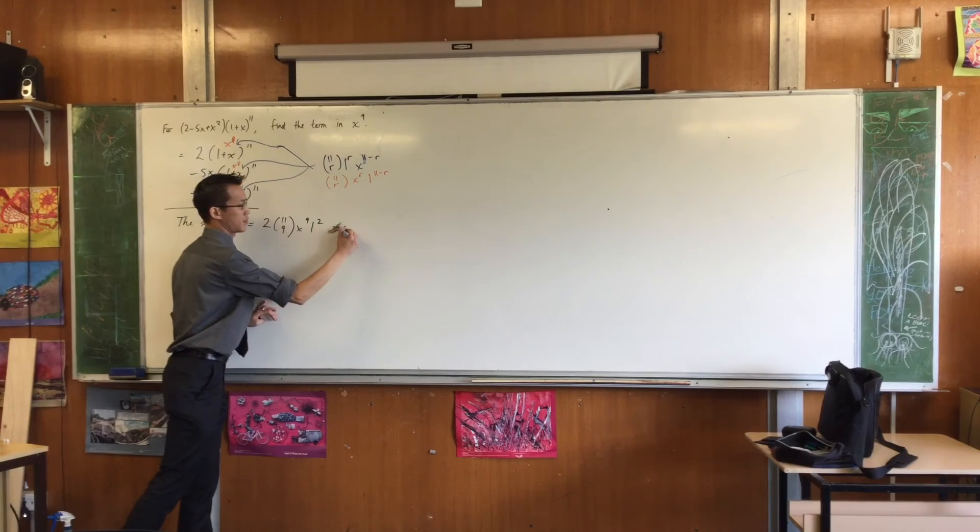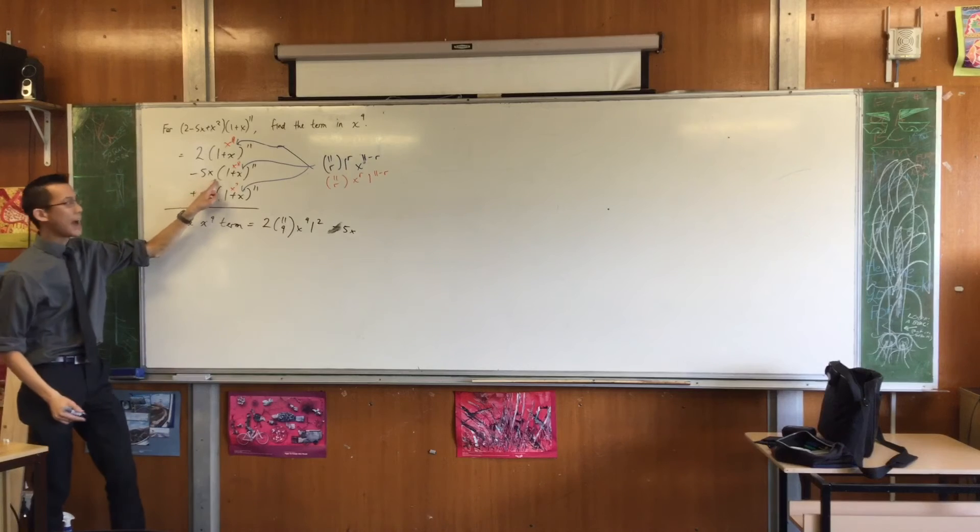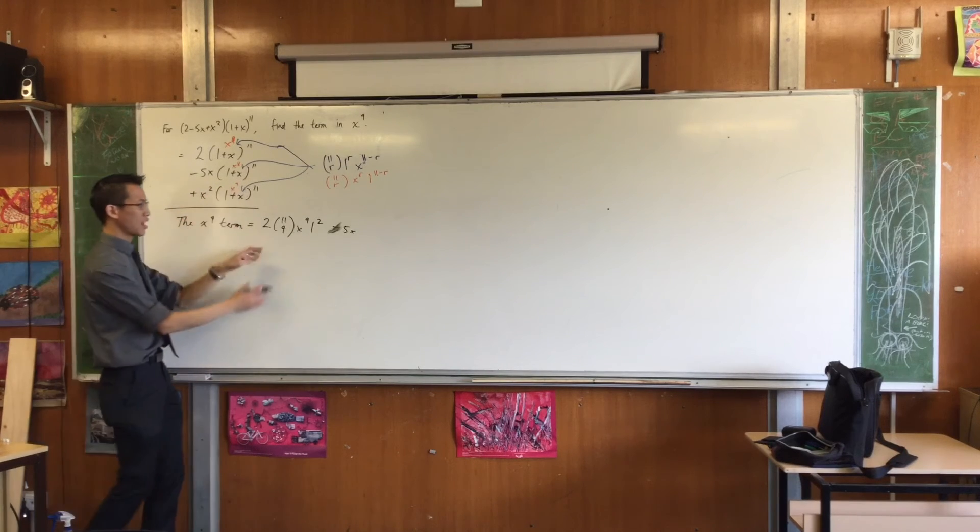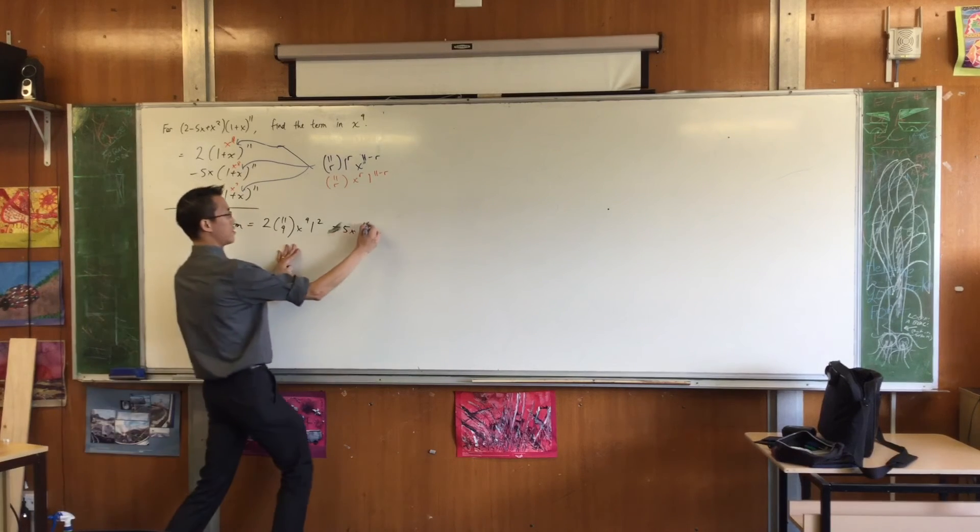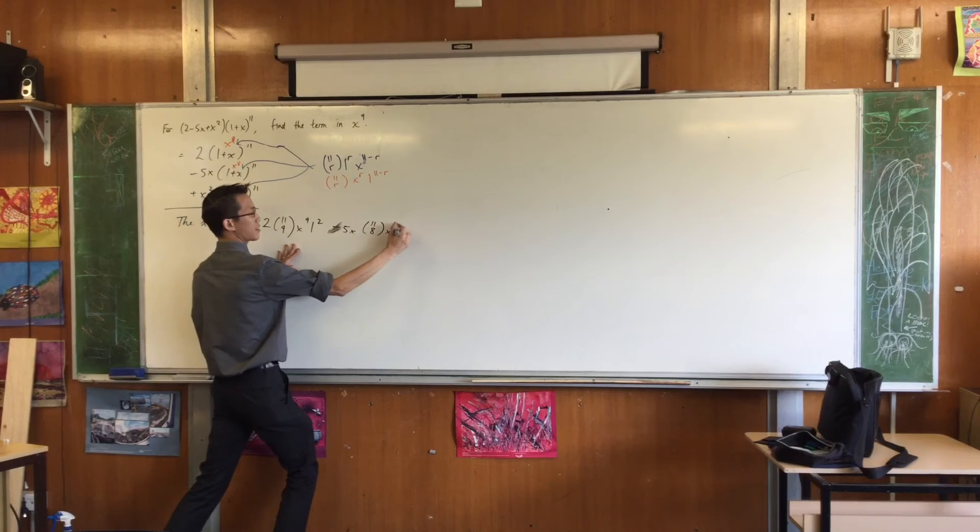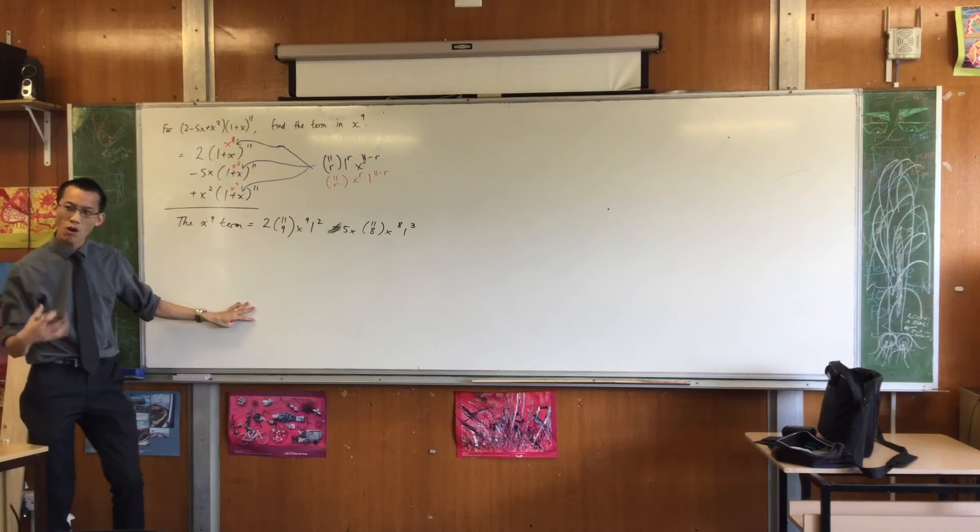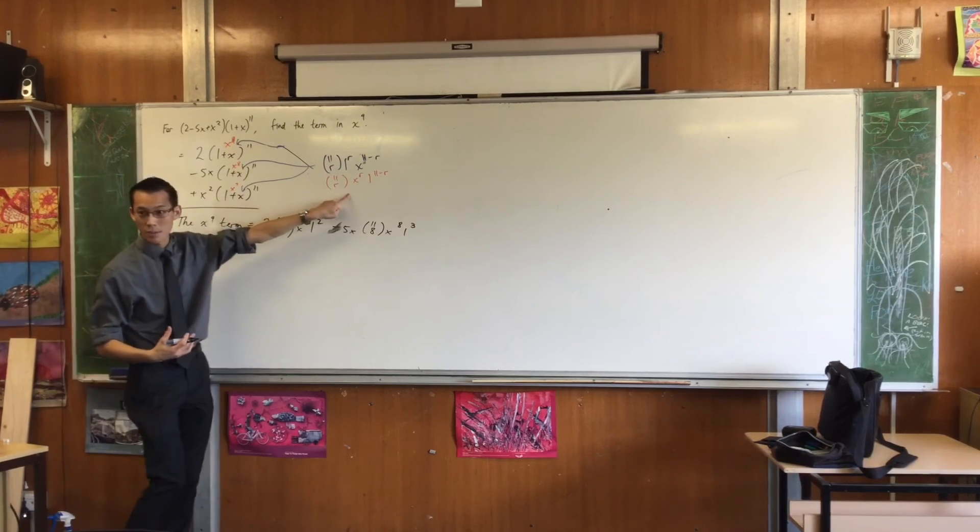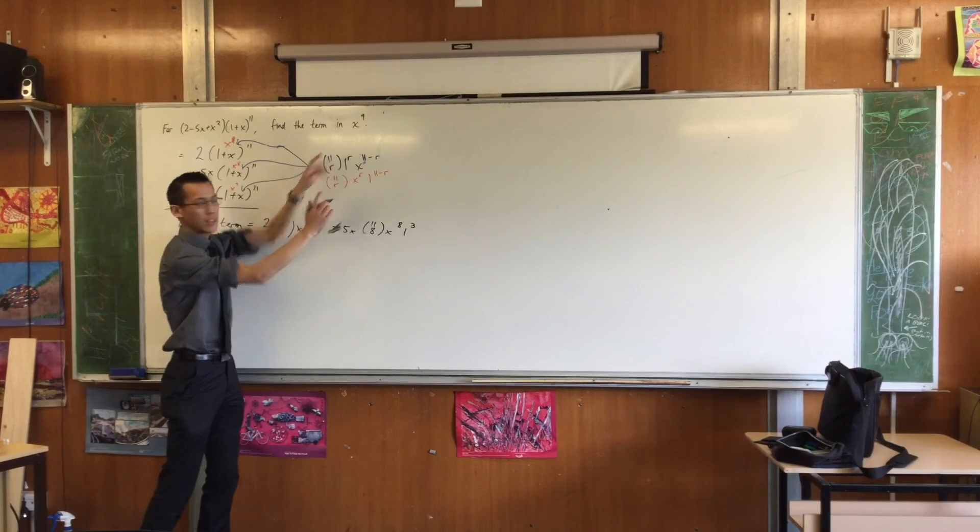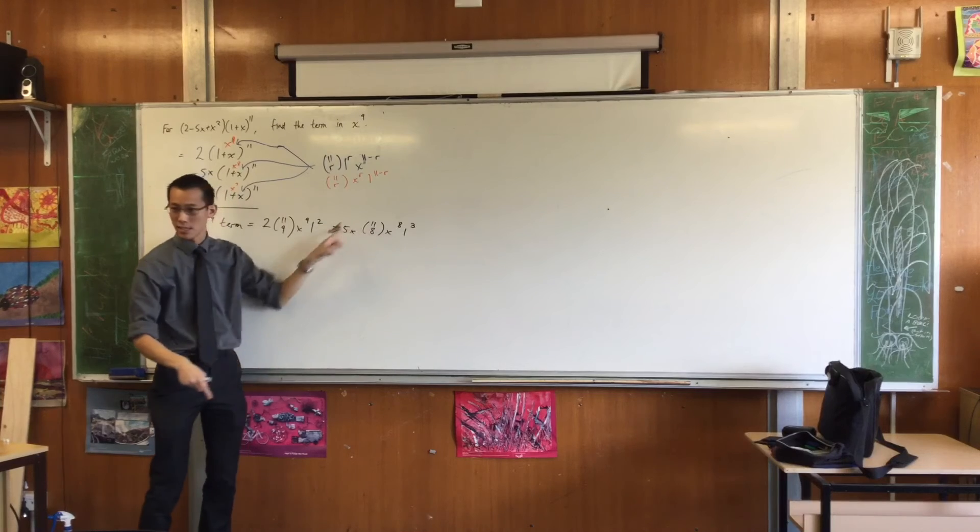Then I move to the next part. It's a minus. Minus 5x here, and then I pull out the x to the 8 term, which I'm actually very good at working out now. It's just 11, c, 8. x to the 8, 1 cubed. Are you with me? See, the whole point of using the general term is that it does all the legwork for you, and then you just put numbers in, and that's the easy bit.